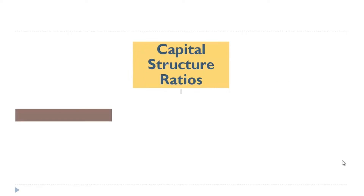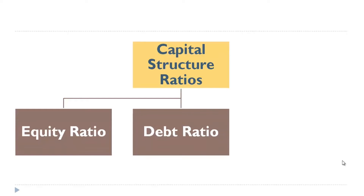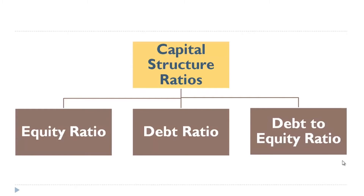Capital structure ratios are basically into three. One is equity ratio, two is debt equity ratio, and three is debt to equity ratio. We'll understand one by one.